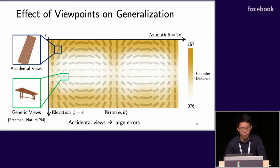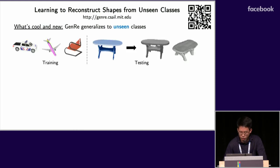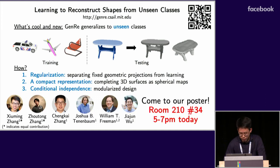We hope this heat map highlights the importance of input views in single image 3D reconstruction. In conclusion, GENRE generalizes to unseen classes — you can train your models on cars, chairs, and airplanes and then reconstruct a 3D bed or 3D table from its image. We did this by imposing stronger regularization using a more compact surface representation and exploiting conditional independence. Thank you for your attention, and please visit our poster for more.